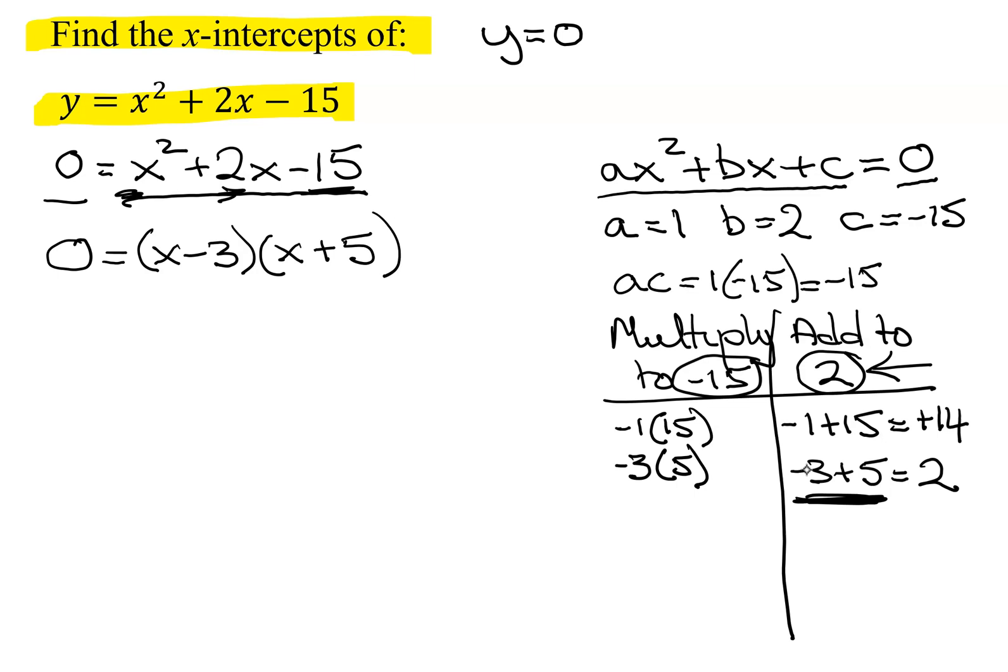Now two numbers multiplied together equals 0. One of them has to be 0, so you set them both equal to 0. On the first one, you're going to add 3 to both sides, so you get x equals 3. The second one, subtract 5 from both sides, you get x equals negative 5.